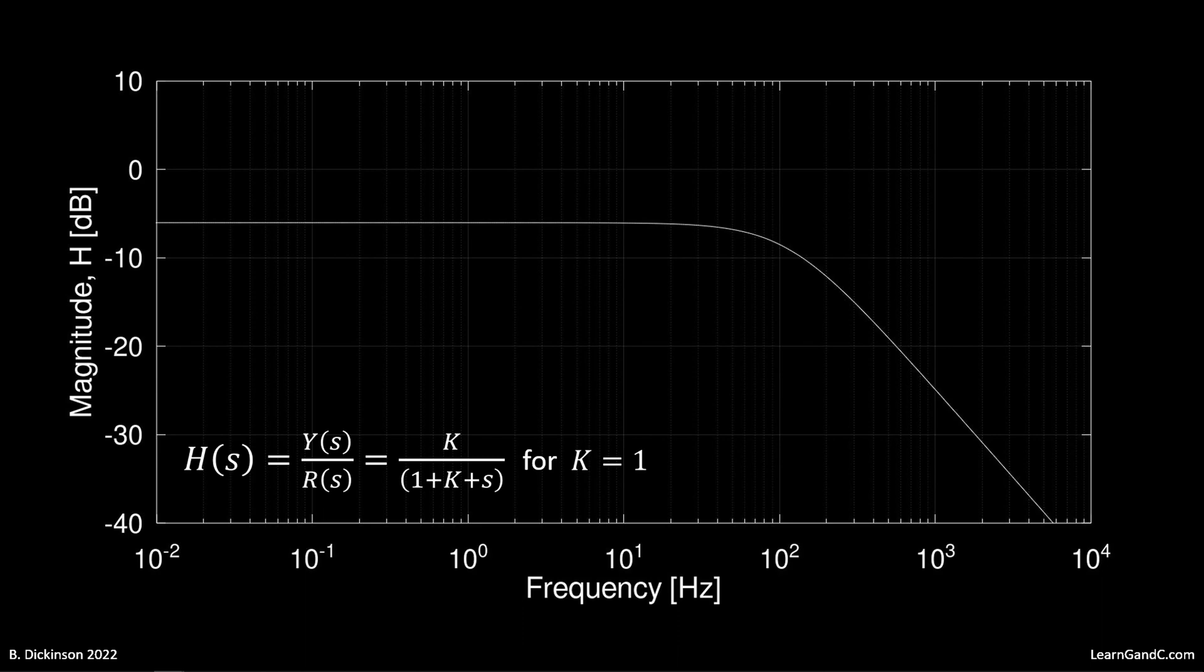Evaluating the closed-loop transfer function for a gain of 1 over a range of frequencies, we obtain the frequency response plot. If the system is tracking, then the magnitude of the output is equal to the magnitude of the input, or the system response is on the 0 dB line. This system at low frequency behaves as K over K plus 1, since S is small.